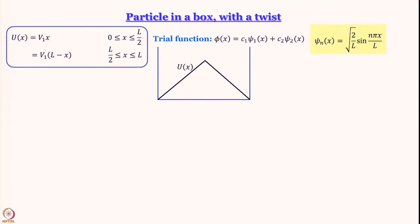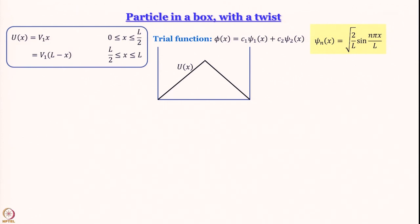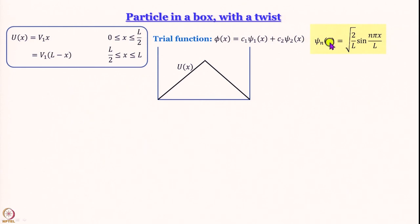The solutions for particle in a box with V = 0 inside are ψₙ(x) = √(2/L) sin(nπx/L), where n = 1, 2, 3, … So ψ₁(x) means n = 1 substituted in this expression, and ψ₂(x) means n = 2.